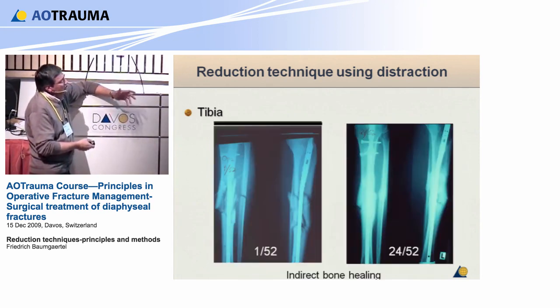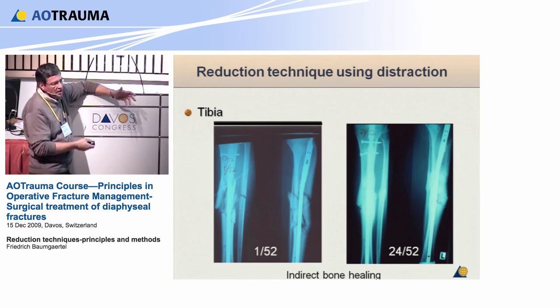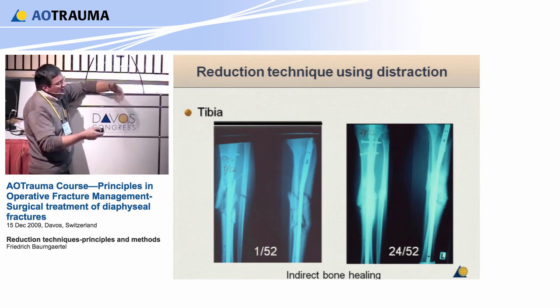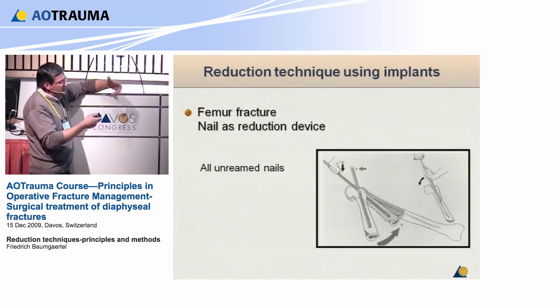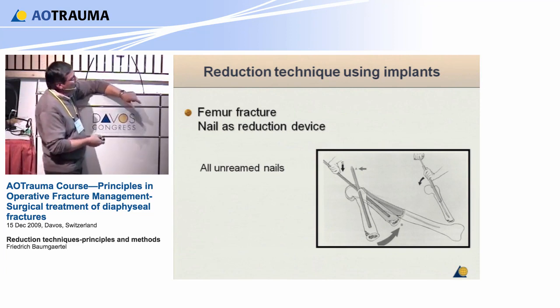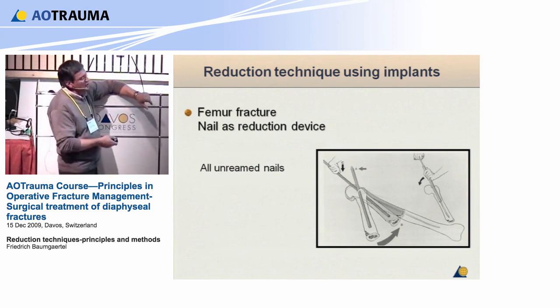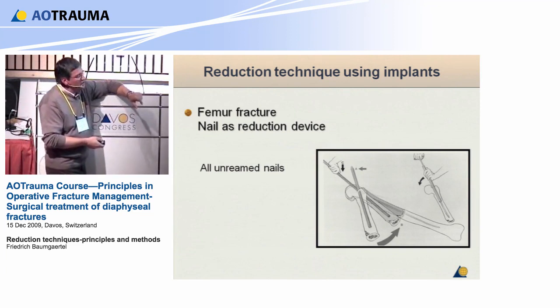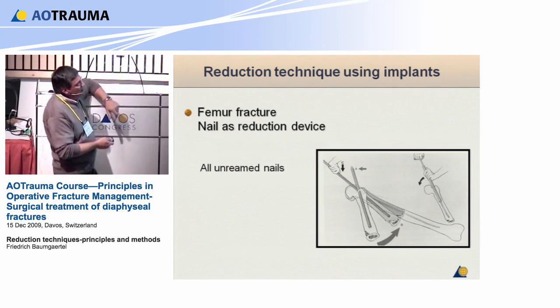You can also use the nail as a reduction device itself. You can call it direct reduction or indirect reduction, but we usually use unreamed nails as reduction implants.